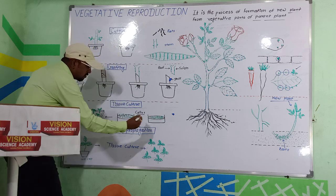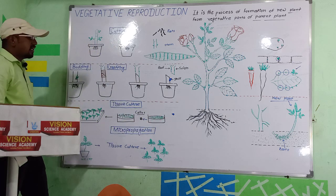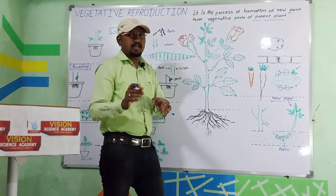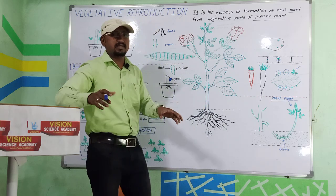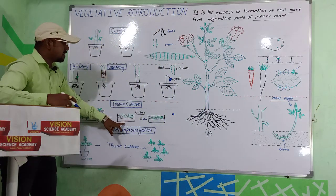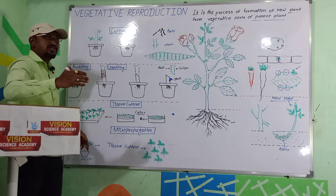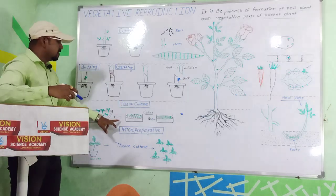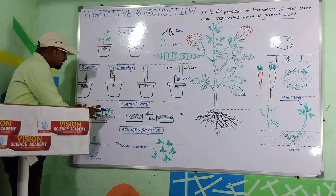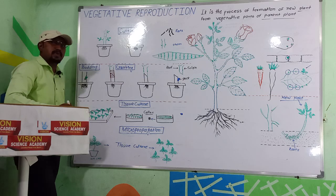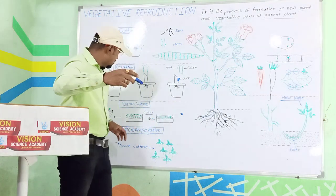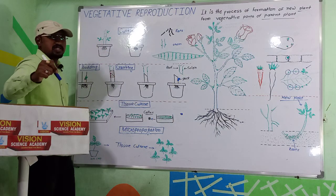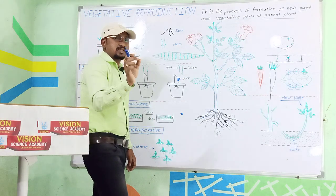The callus is an undifferentiated mass of cells. From the callus, root and shoot develop, and then a plant forms. These small plants are called plantlets. This is an advanced scientific method of vegetative propagation through tissue culture.